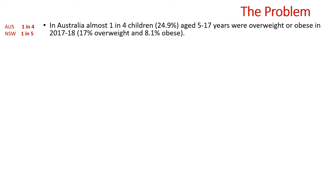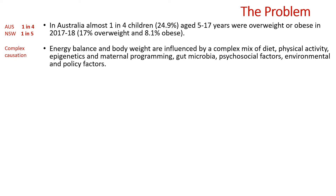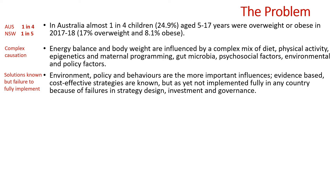Let's try to define the problem. In Australia, almost one in four children are overweight or obese. The causes are complex — energy balance and body weight are influenced by a complex mix of factors. Solutions are known, but there is a failure to fully implement them.